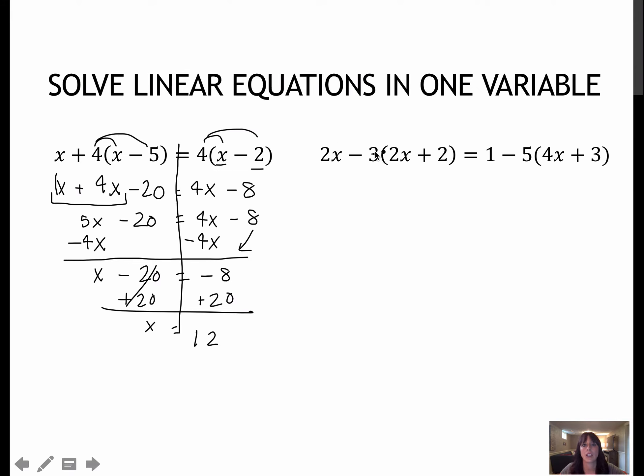Same thing's going to happen over here. Be careful whenever you have a minus on the outside of a value that's being distributed. So here I'm going to recopy my 2x, but this is a negative 3 that I'm distributing to both values on the inside. So you can either think of it as a minus 3 or a negative 3, whichever makes more sense to you because they're really the same thing. So if negative 3 times 2x would be negative 6x, I'm going to write minus 6x. Negative 3 times positive 2 gives me negative 6. And notice we're going to have the same situation over here. Negative 5 times 4 is negative 20x, and negative 5 times 3 is negative 15.